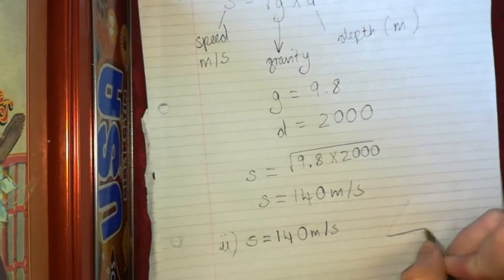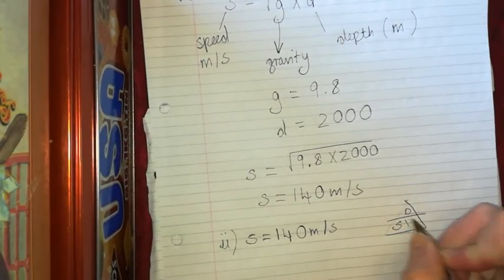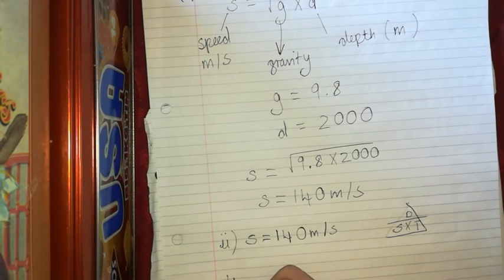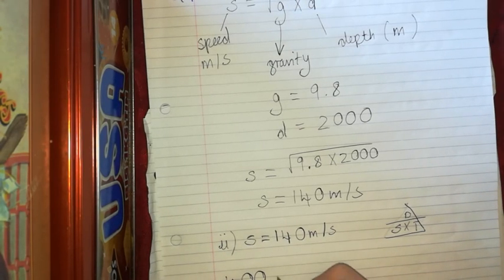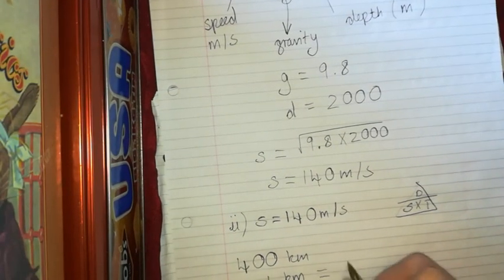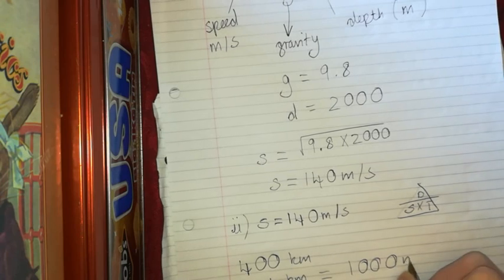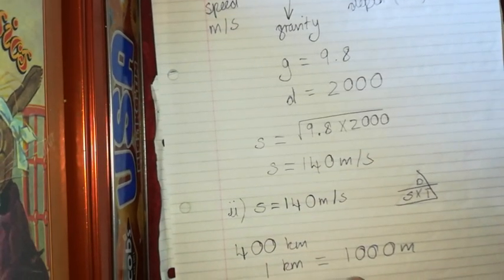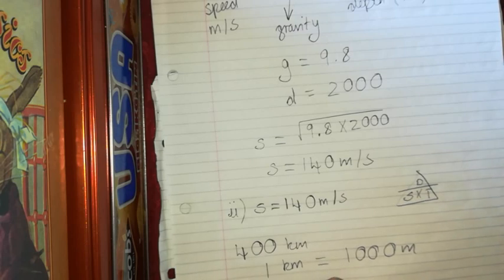So the distance is 400 kilometers, but the speed is in meters per second. So if 1 kilometer is 1,000 meters, then 400 kilometers is going to be 400,000 meters.